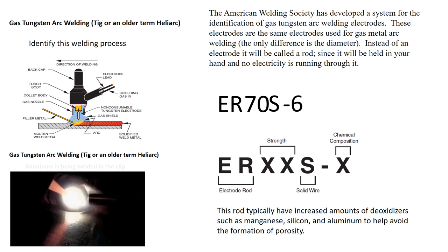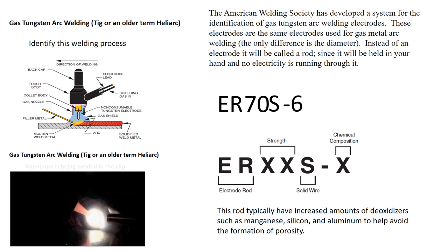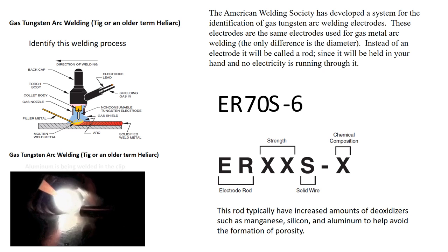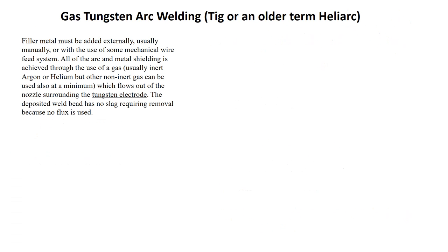This rod typically has increased amounts of deoxidizers such as magnesium, silicon, and aluminum to help avoid the formation of porosity. Trying to weld without these deoxidizers would cause porosity. When TIG welding, filler metal must be added externally, usually manually or with the use of some mechanical wire feed system. All of the arc and metal shielding is achieved through the use of gas.